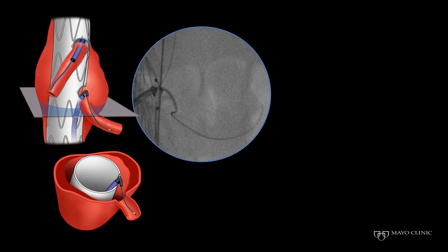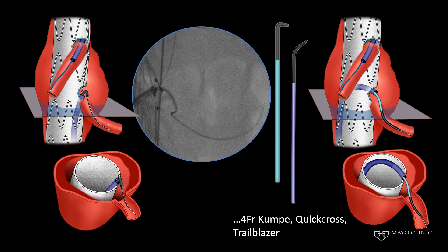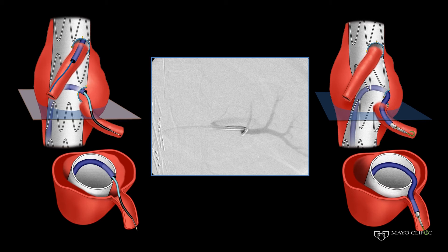The Vent-Chi-3, even though it is very good to selectively catheterize the vessel, does not track well into the target vessel. So my preference is to exchange for a 4-French Kumpe catheter, or use a QuickCross or Trailblazer catheter to secure access into the vessel, then exchange the wire for a Rosen wire and advance the sheath.